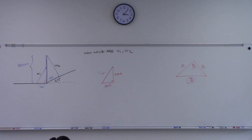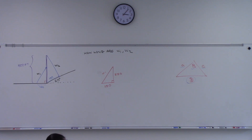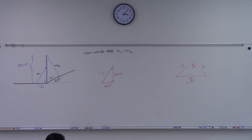Go to that formula for little b. What's cosine of 90 degrees? Everybody in unison? Cosine is the x-coordinate — zero, right?